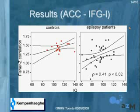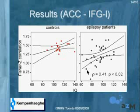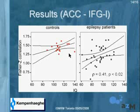We also mapped the relationship: on the x-axis you have the IQ, and on the y-axis the Fisher Z-transformed correlation coefficient of the two regions, ACC and left inferior frontal gyrus. You can see that for the patients there is a nice correlation — the lower the IQ, the lower the correlation coefficient — and this relationship is significant for the patients. For the controls it is not significant, but this may be due to the lower number of persons.